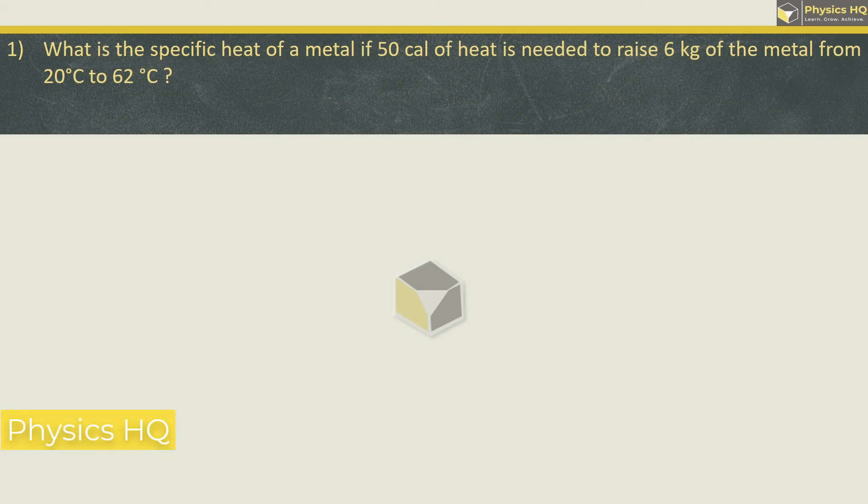What is the specific heat of a metal if 50 calories of heat is needed to raise 6 kg of the metal from 20 degree Celsius to 62 degree Celsius? Specific heat capacity is given by heat provided divided by the mass into the change in temperature. Heat provided here is 50 calories, mass is 6 kg and change in temperature is from 20 to 62, means 42 degree Celsius.